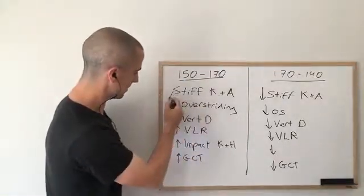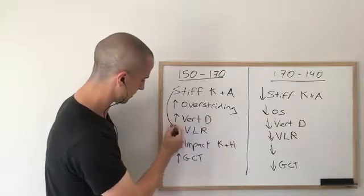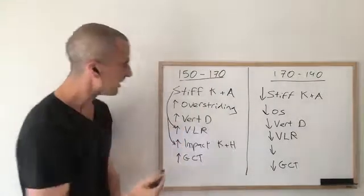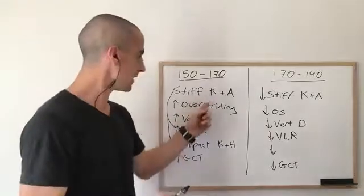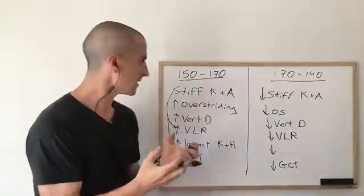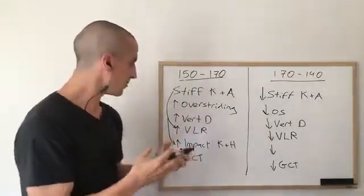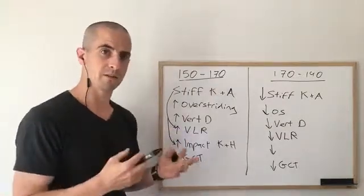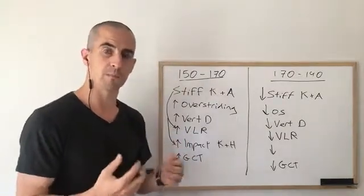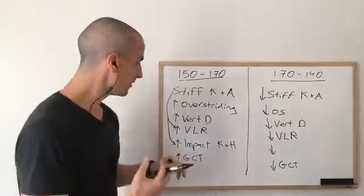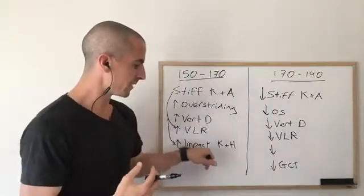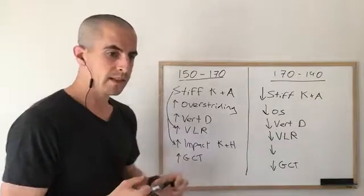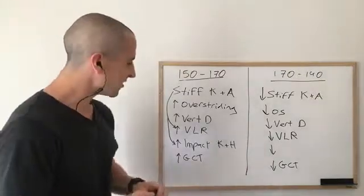It's worth noting how these features relate to each other. The stiff knee and ankle give you the increased vertical loading rate and increased impact forces. When you land with a stiff knee and ankle, you don't absorb the force very well, your impact goes up, you make more noise — you become more of a thudder kind of runner — and you have increased impact forces at the knee and hip.